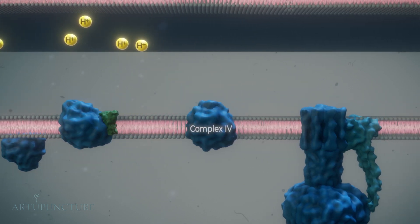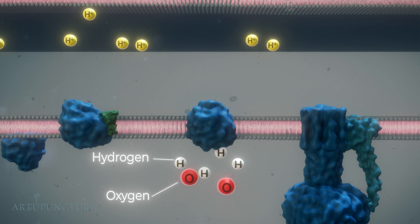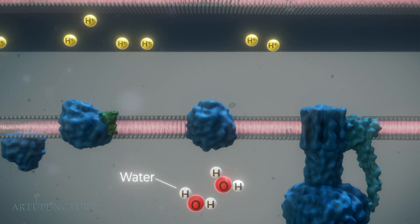In complex IV, the energy from electrons is used to pump additional protons into the intermembrane space. Oxygen reduced at complex IV combines with protons from the mitochondrial matrix to form water.